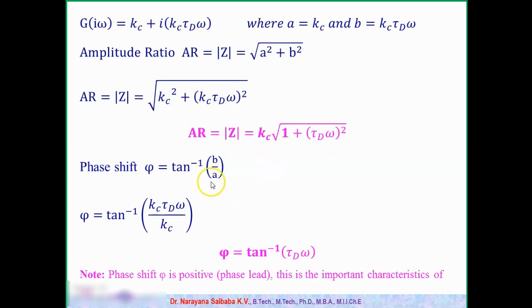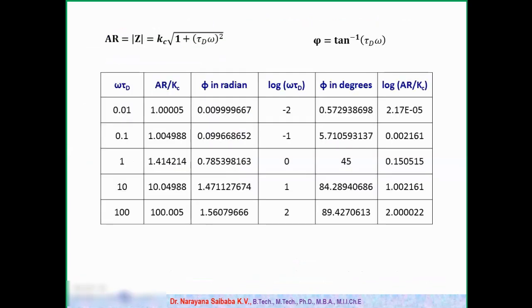Similarly, phi can be calculated as tan^(-1)(B/A). B value is Kc*tau_d*omega, A value is Kc, so both will cancel, we will have tau_d*omega. See here, the basic difference between proportional controller and PI controller and PD controller is, for proportional controller and PI controller, we will get phase lag, that means phi values we can get negative. But for PD controller, always this value will be positive. So phi we can call it as phase lead, that is the basic difference.